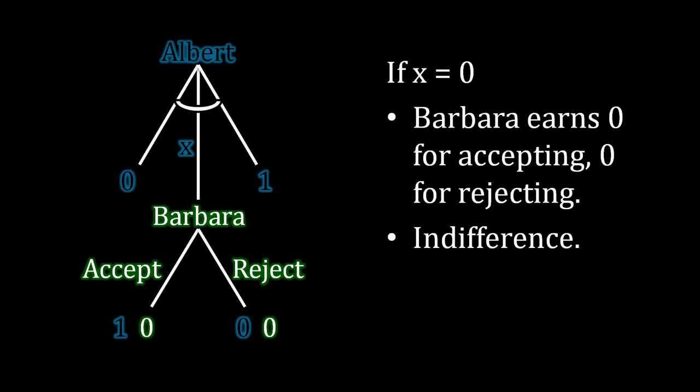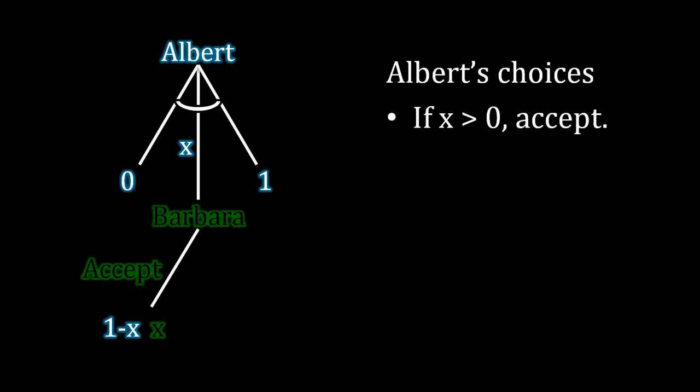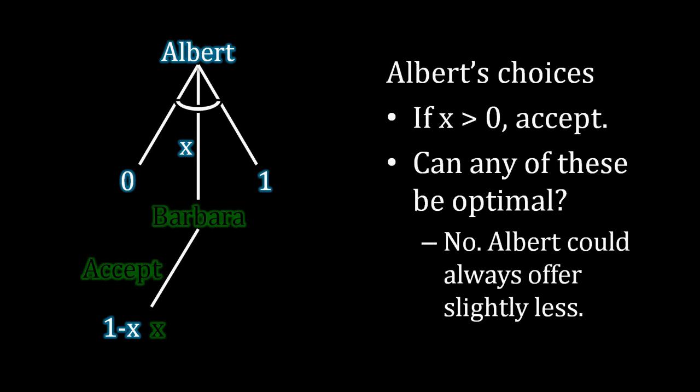To see why there's only going to be a singular optimal outcome, notice that if Albert is offering some strictly positive value of the surplus, Barbara has to accept that. So think about the best possible offer Albert can make from his own perspective. Well, if any strictly positive value for Barbara is being accepted, none of those offers can be optimal for Albert, and the reason is that he can always offer slightly less. So imagine that Albert was offering Barbara 0.1, in that case Albert receives the remainder which is 0.9. But he could halve the amount he is offering to Barbara, so instead of offering 0.1 he could offer 0.05. Now that 0.05 is still a value strictly greater than 0, so Barbara has to accept it, but this time Albert is receiving 0.95, which is better than the 0.9 he was receiving before.